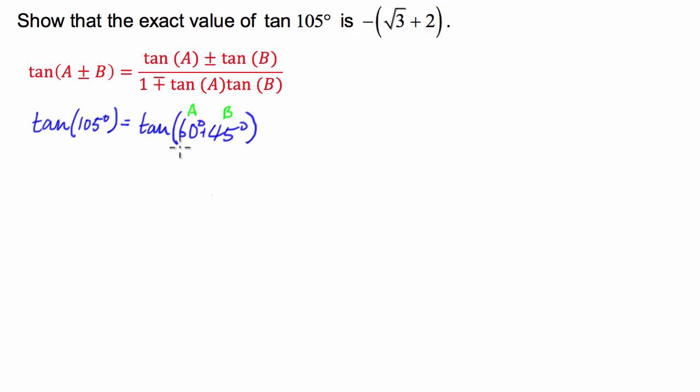It's literally just we plug in the 60 for A and we plug in the 45 for B. And in this case because we're adding them we're going to have the tan of 60 plus the tan of 45 divided by 1 minus the tan of 60 times the tan of 45.